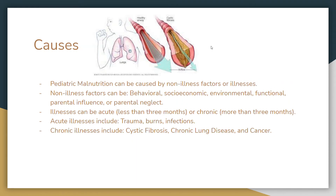Now we're going to talk about some of the causes of pediatric malnutrition. These causes could be based on non-illness factors or illnesses. Non-illness factors can be behavioral, socioeconomic, environmental, functional, or based on parental influence or, conversely, parental neglect. There are also illness factors. Illnesses can be acute, meaning they last less than three months, or chronic, meaning they last more than three months.